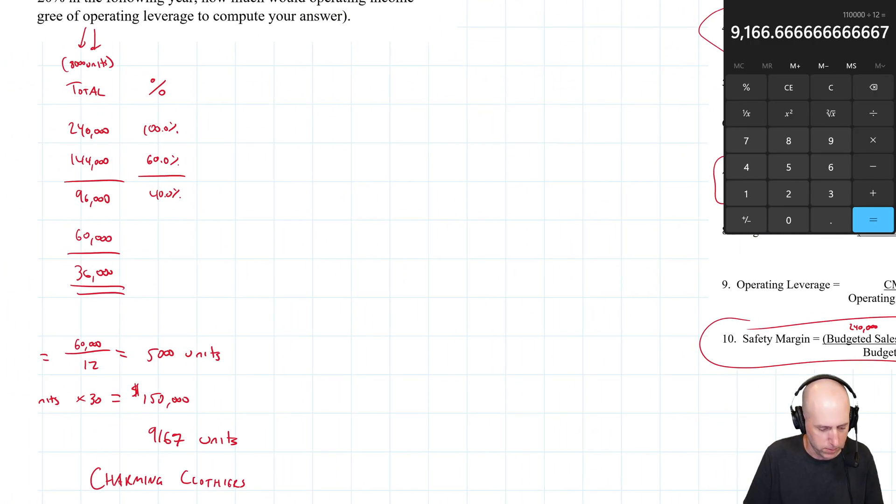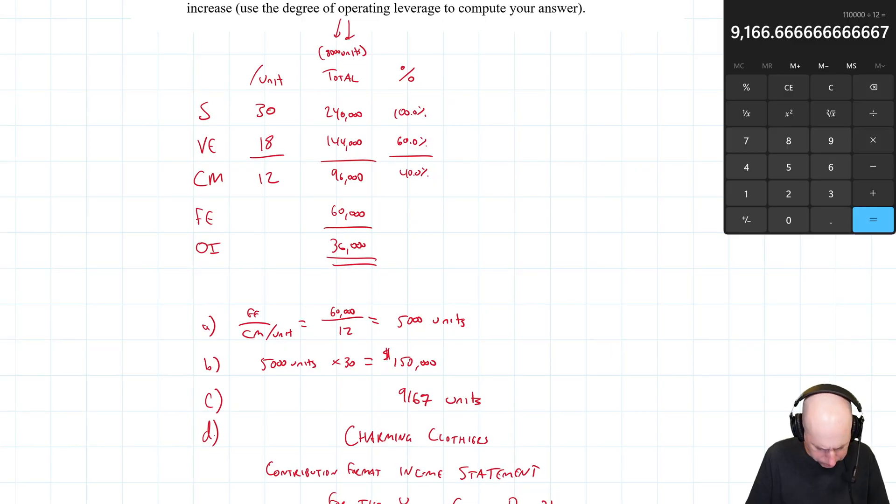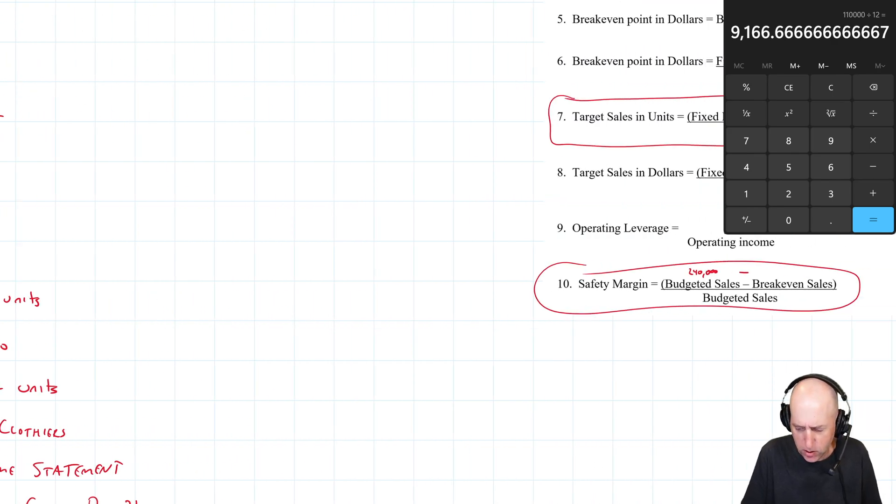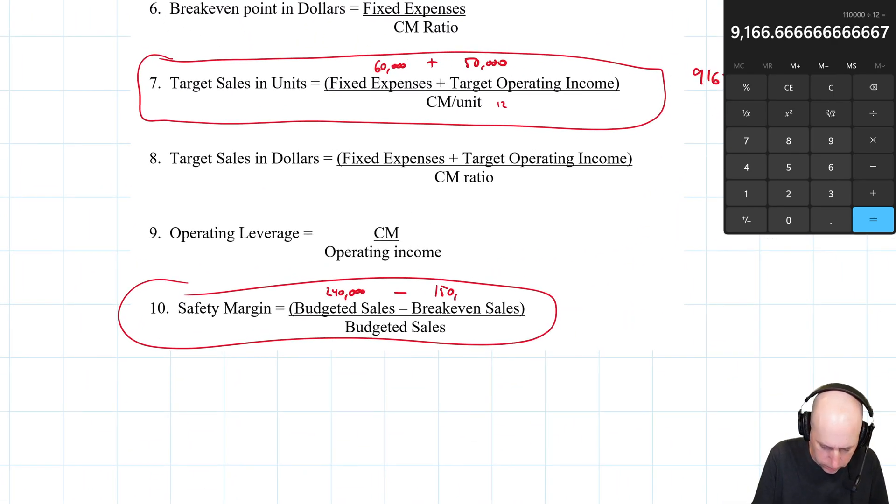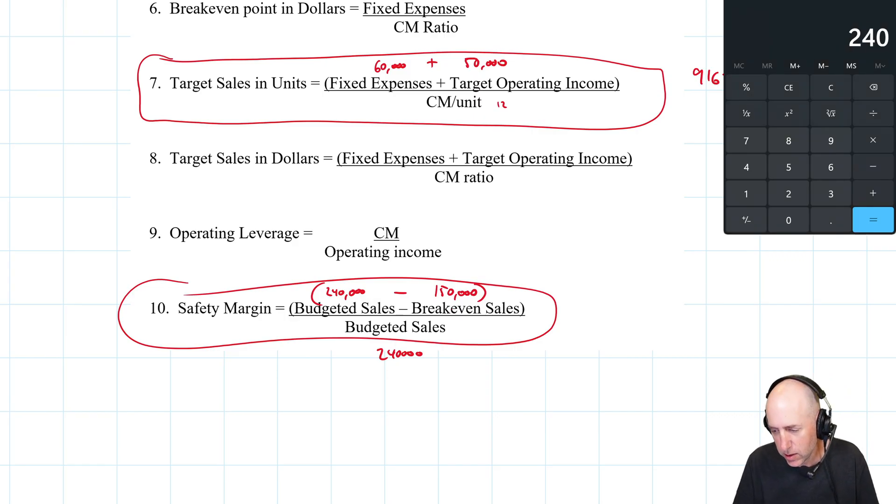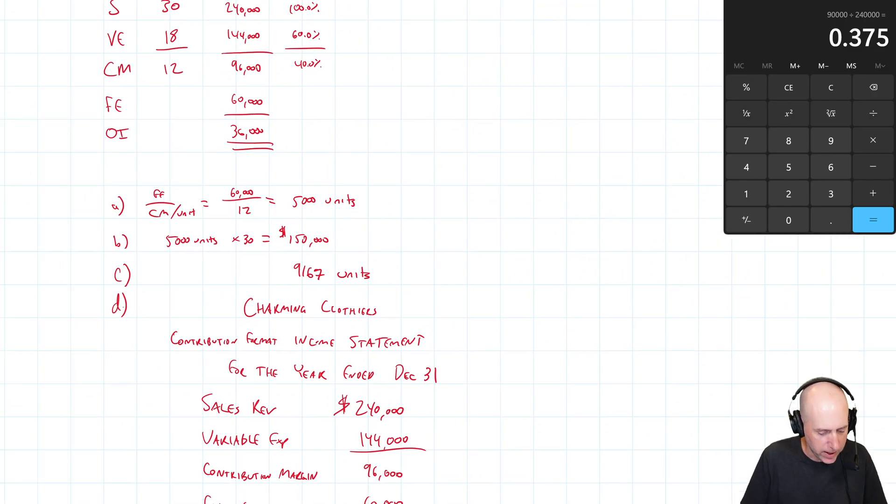So that's my breakeven sales, $150,000. And we divide by budgeted sales. So again, 240 minus 150 divided by 240, that's 0.375. And it says state that as a percentage, so 0.375, which is 37.5%. So that's our answer.